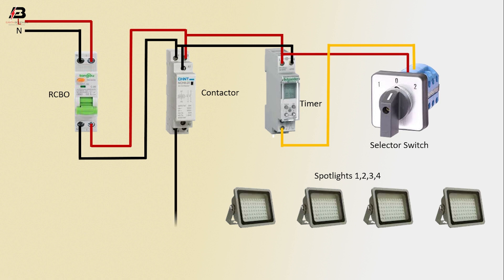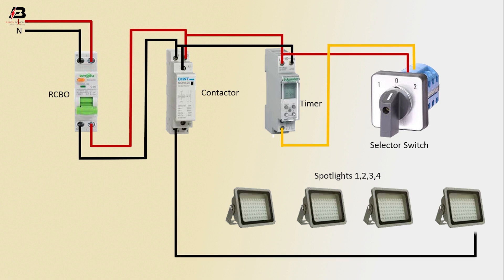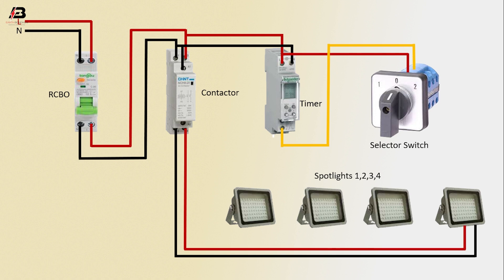Neutral connection from contactor to connect SPOTLIGHT 4. Phase connection from contactor to connect SPOTLIGHT 4. Neutral and phase connection to SPOTLIGHT from contactor. Again, from contactor to SPOTLIGHT 2 and SPOTLIGHT 1.